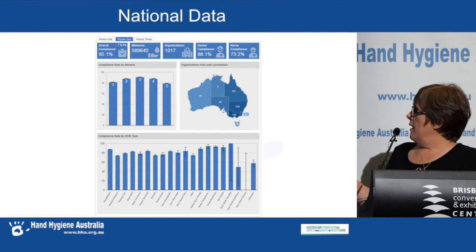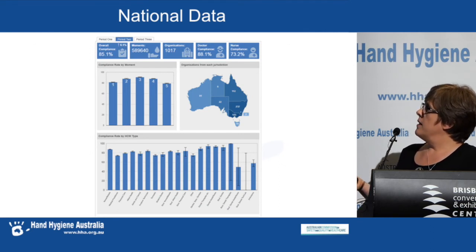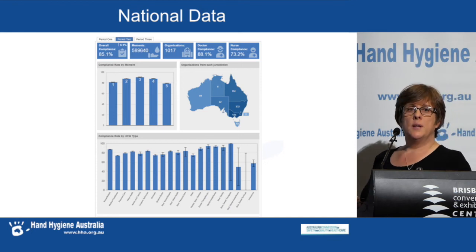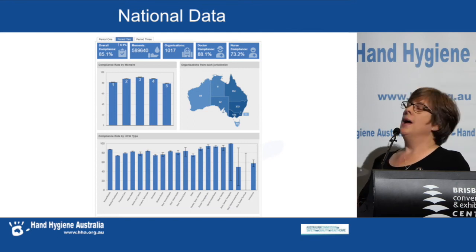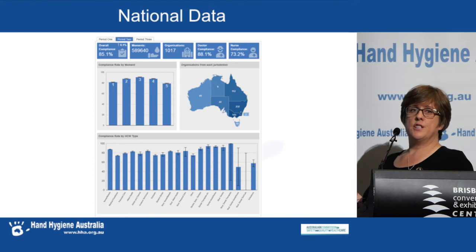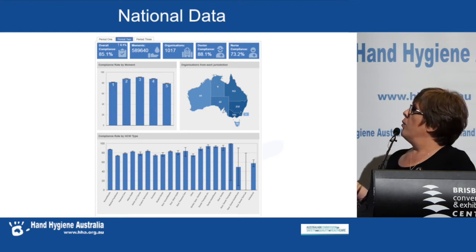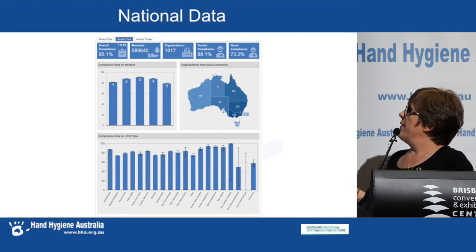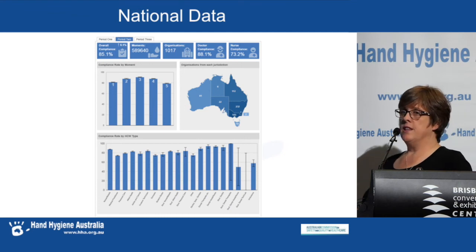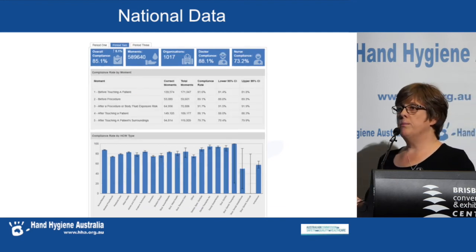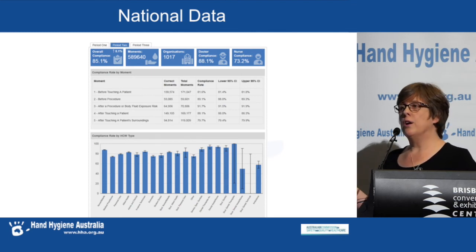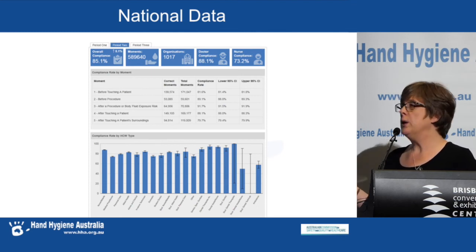The next new thing is the national data page. When the national data is released in the next couple of weeks, you will see the data as a new interactive page. By audit period, there will be a summary across the top showing compliance, and a series of graphs underneath breaking the data down. All you need to do to see the actual data is click on any one of these graphs to see the data table underneath. We think that's a nice change from what you've probably been looking at for some time.